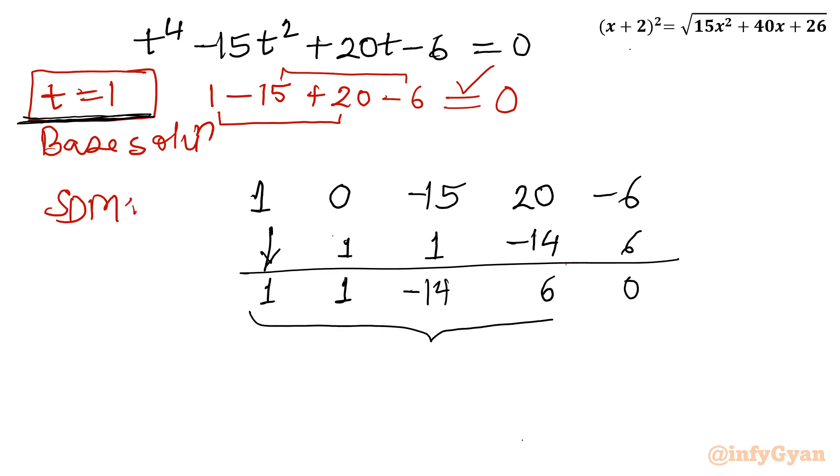So these are coefficients for cubic equation. So I will be writing t³ + t² - 14t + 6 = 0.